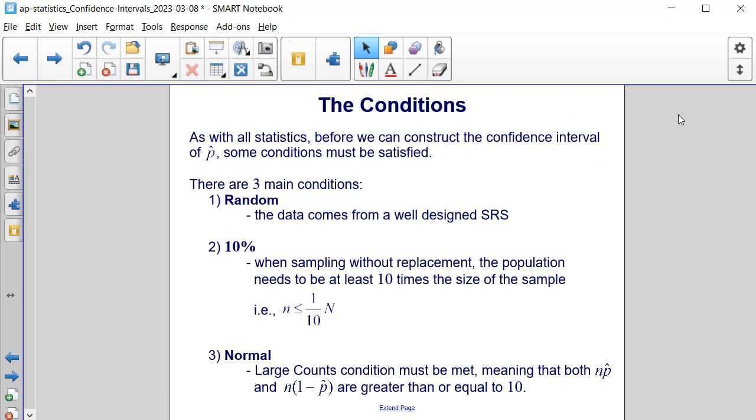As with all statistics, before we can construct the confidence interval of our sample proportion p-hat, some conditions must be satisfied. There are three main conditions. First, it must be random, meaning the data comes from a well-designed simple random sample, or SRS.